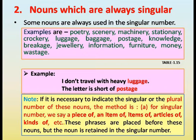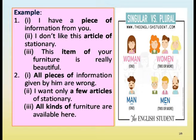If it is necessary to indicate singular or plural number of these nouns, for singular we say a piece of, an item of, articles of, kinds of, etc. These phrases are placed before the nouns but the noun is retained in singular. Examples: I have a piece of information. I don't like this article of stationery. This item of furniture is really beautiful. All pieces of information given by him are wrong. All kinds of furniture are available here.